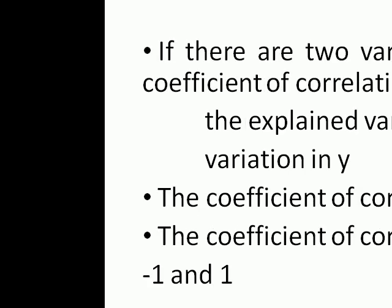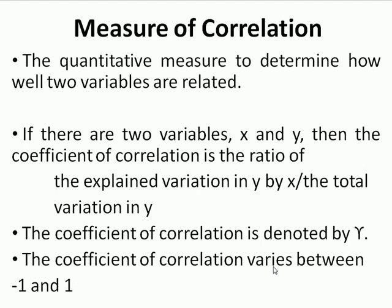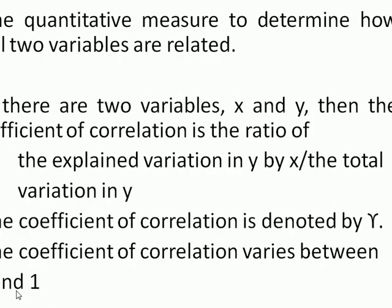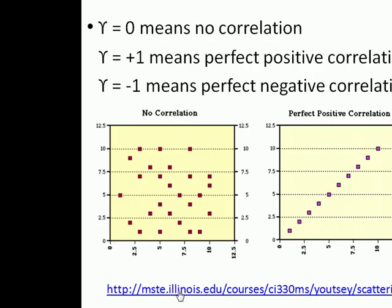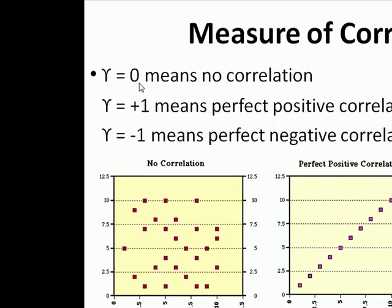The coefficient of correlation is denoted by gamma and it varies between minus 1 and plus 1. When gamma is equal to 0, it shows that there is no correlation between two variables. If gamma is plus 1, it shows a perfect positive correlation. If gamma is negative 1, it shows a perfect negative correlation between variables.